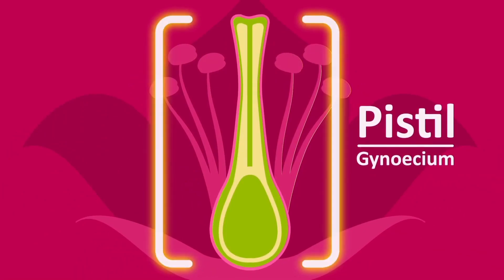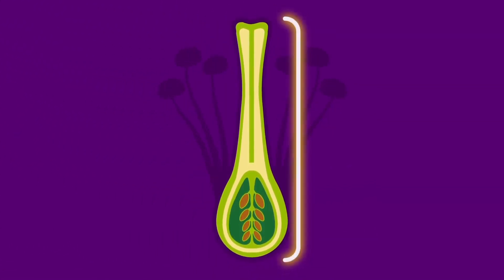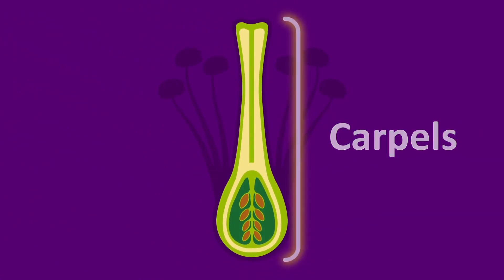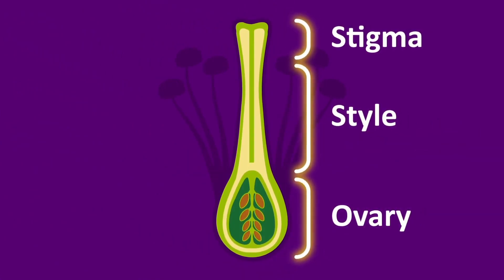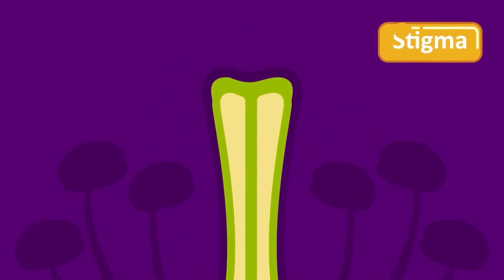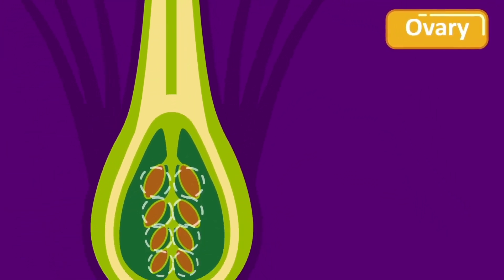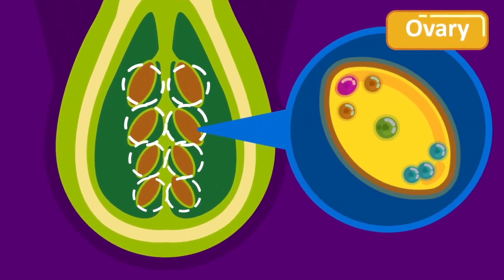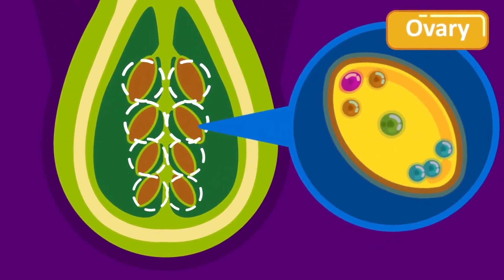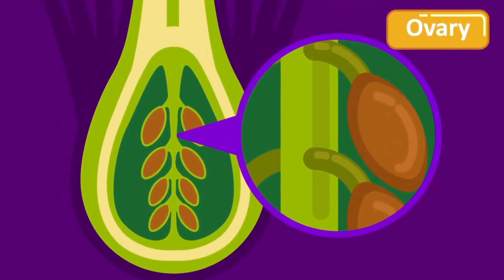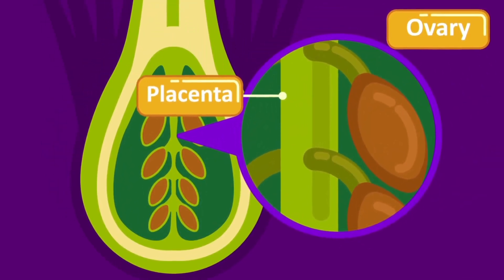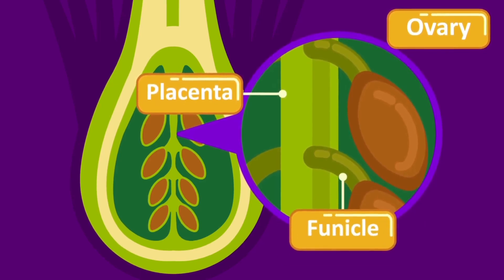The pistil, also known as the gynoecium, is the female part of the flower. It consists of one or more units called carpels. A carpel consists of an ovary, a style above the ovary, and one or more stigmas. The stigma is a swollen structure at the end of the style which receives the pollen grains. The ovary contains one or more ovules; a mature ovule has a female gamete inside called the ovum. The region in the ovary to which the ovules are attached is called the placenta. The ovule is attached to the placenta by a funicle.